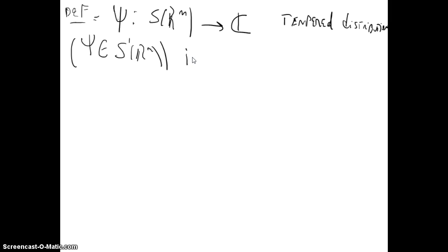And we will define temperate distribution. We'll say that ψ goes from S(R^n) to C is a temperate distribution if ψ is in the dual of the Schwarz space if...